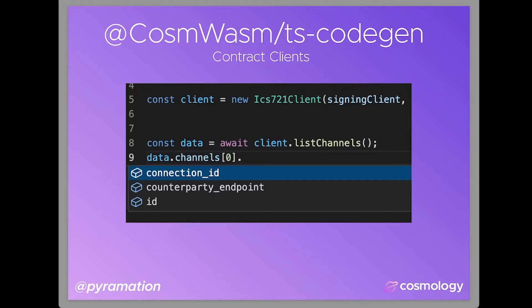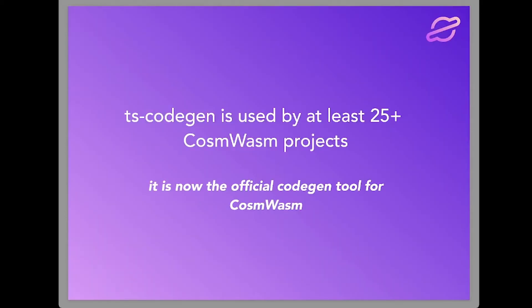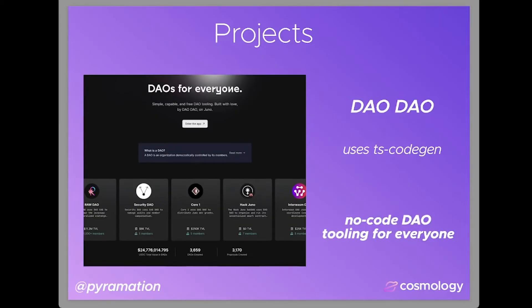More details in the future videos — please watch those — but just know that TS CodeGen is actually being used by at least 25 plus projects in the CosmWasm ecosystem right now. It is actually the official CodeGen tool for CosmWasm, and being used by great projects such as DaoDao, a no-code DAO tooling for everyone.